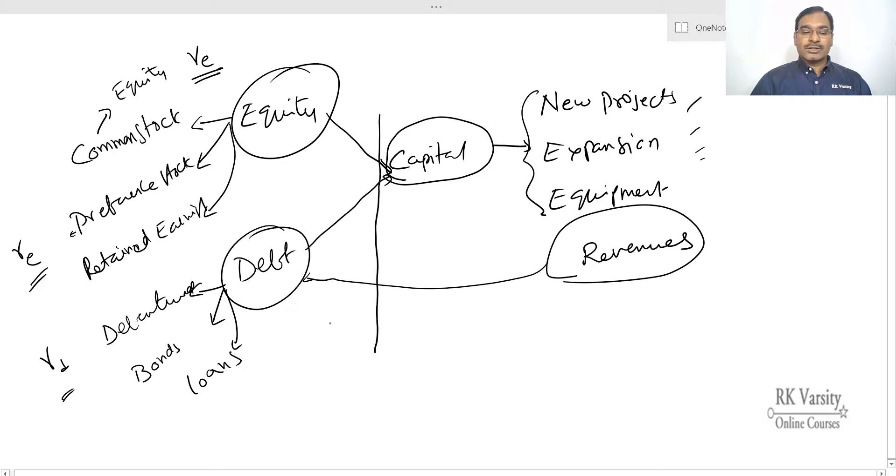To evaluate the projects, what we do is ascertain the total cost, that is the overall cost of capital of this company. Let us say if the overall cost of capital is 12%, then the new projects which the company is going for should yield anything more than 12%. So your decision to accept a project is your overall cost of capital plus premium.